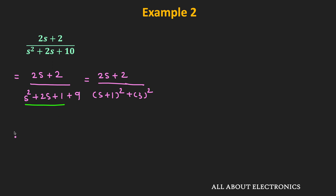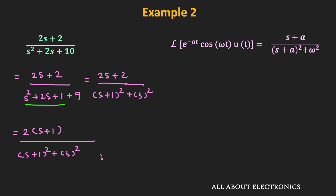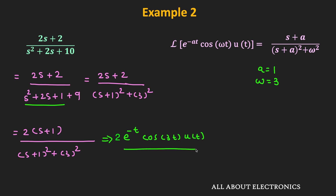In the numerator we can factor out 2, giving 2(s + 1) / ((s + 1)² + 3²). From the previous videos we know that the Laplace transform of e^(−at)·cos(ωt)·u(t) equals (s + a) / ((s + a)² + ω²). Here a = 1 and ω = 3, so the inverse Laplace transform of the given expression is 2·e^(−t)·cos(3t)·u(t). Using a little algebraic manipulation we can convert X(s) into a form suitable for the Laplace transform table.